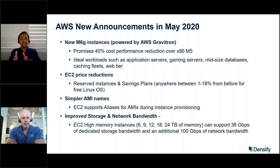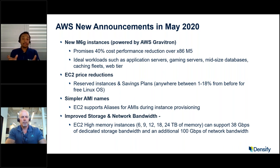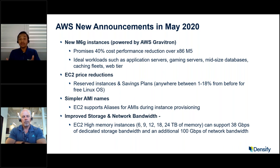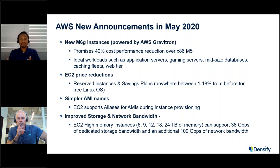Should I go ahead and buy a reserved instance or savings plan? What are my savings opportunities? How can I run at the most cost-optimized manner? AWS also announced simpler AMI names — essentially aliases for your AMI names that you can refer to when spinning up EC2 instances. And lastly, AWS announced increased storage and network bandwidth performance for high-memory instances, supporting up to 38 gigabytes of dedicated storage bandwidth and up to 100 gigabits of network bandwidth for select high-memory type instances.